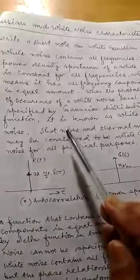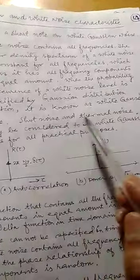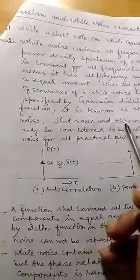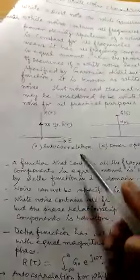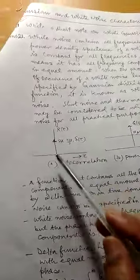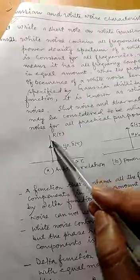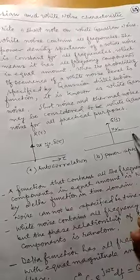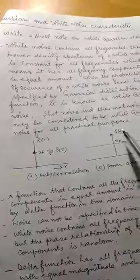So shot noise, thermal noise may be considered to be white Gaussian noise for all practical purposes. Here we have drawn two diagrams: one is an impulse function, another is a constant function. If you see, so the white Gaussian...